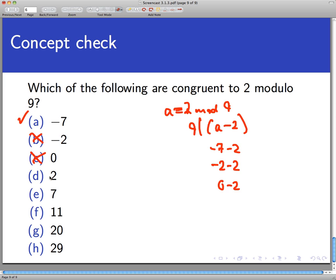2 is congruent to 2 modulo 9 because 2 minus 2 is 0, and 9 definitely divides 0. 7 is not because 7 minus 2 is 5, and 9 does not go into 5 evenly.